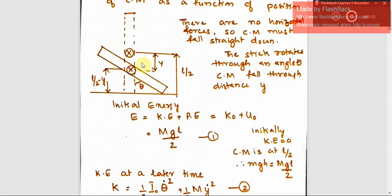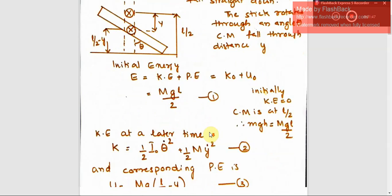Now let us look at the energy of this stick. Initially, the total energy is kinetic energy plus potential energy, that is K₀ plus U₀. Initially the kinetic energy is zero. The potential energy at the center of mass is MgH, where M is the mass of the stick, g is acceleration due to gravity, and L/2 is the height of the center of mass from the ground. So the initial total energy is MgL/2. That is equation number 1.